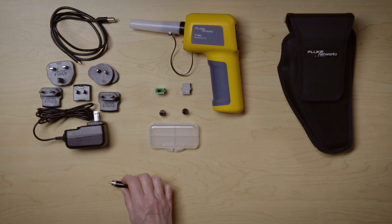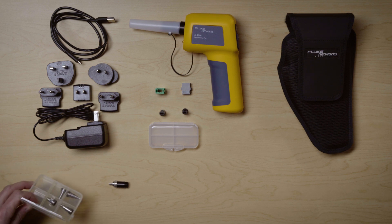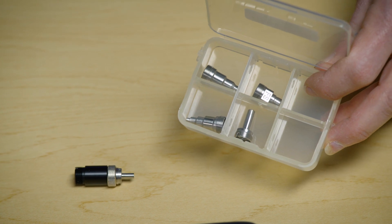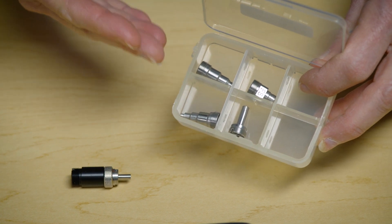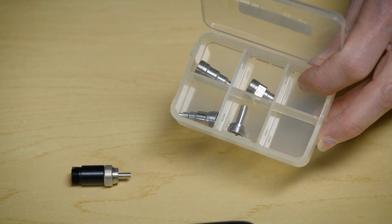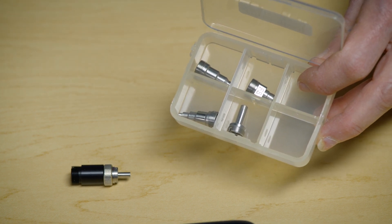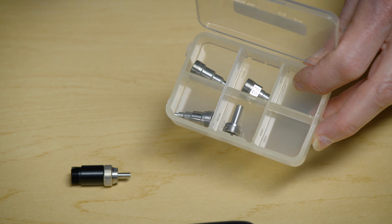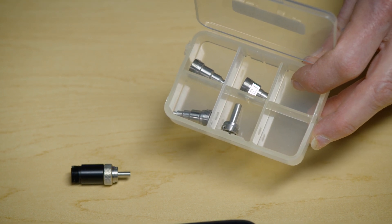The kit also contains this special single fiber adapter which supports a whole range of optional single fiber tips such as these 1.25 and 2.5 millimeter bulkhead and patch cord tips plus a whole range of other tips including an extension tip to get into those hard to reach spaces.